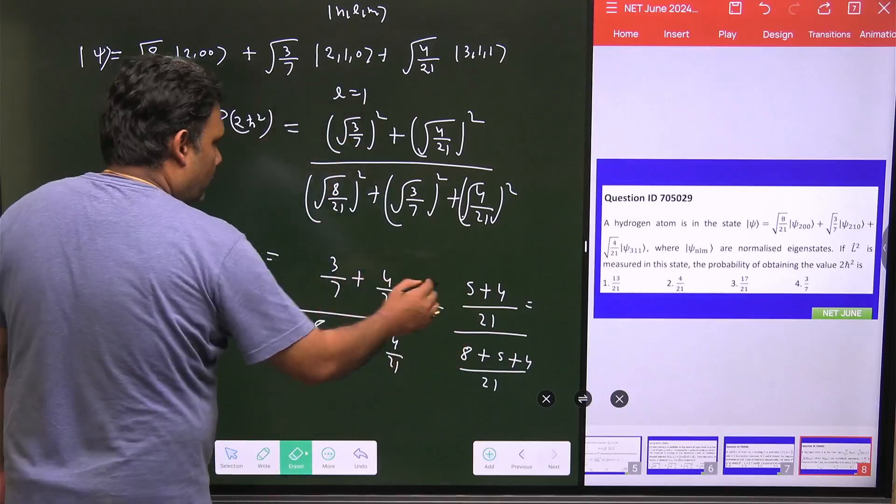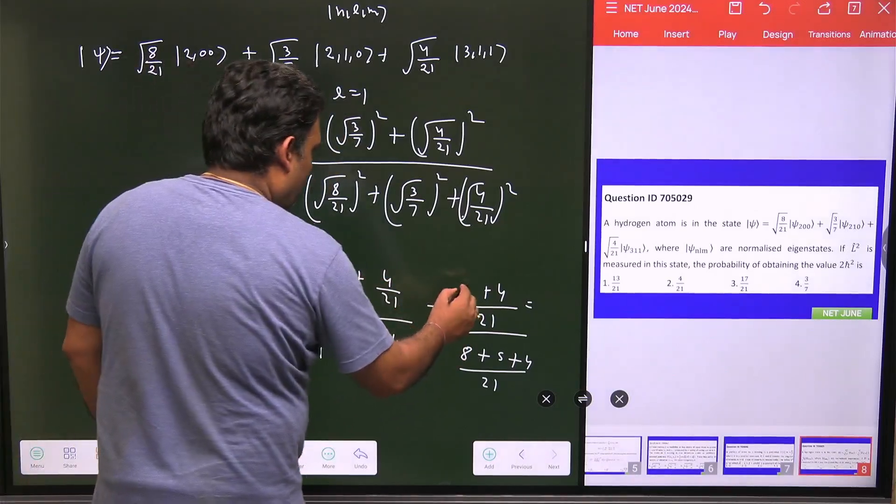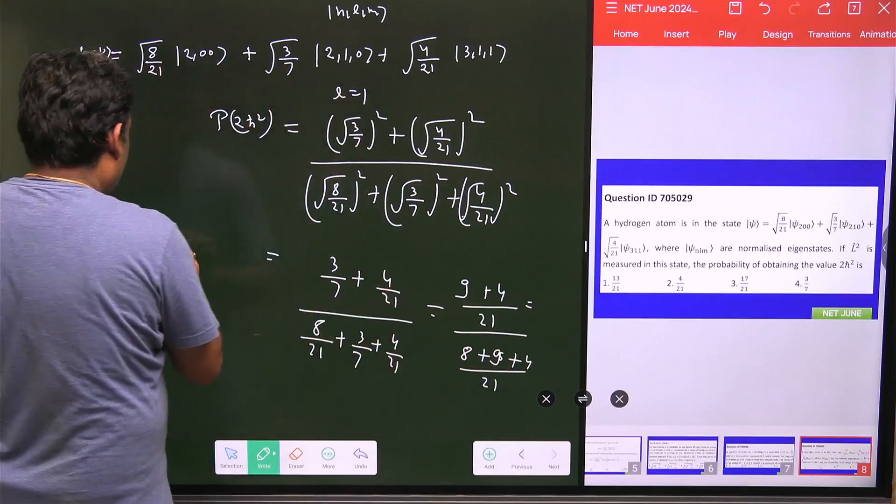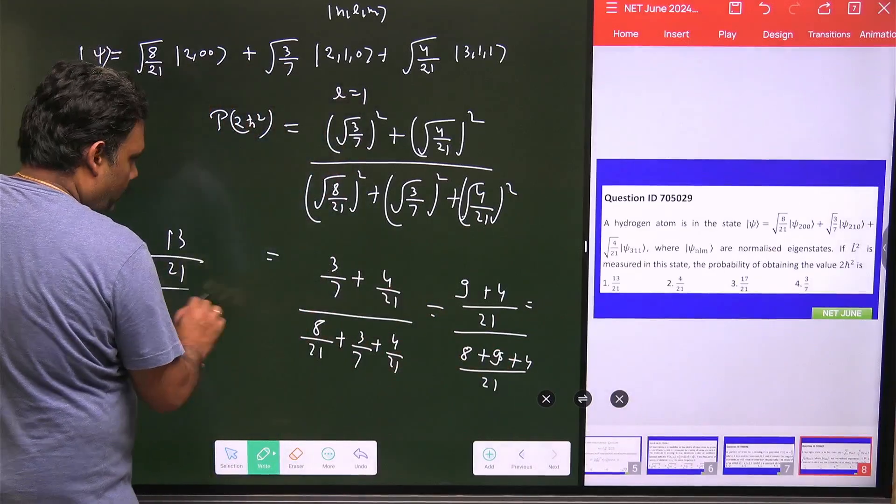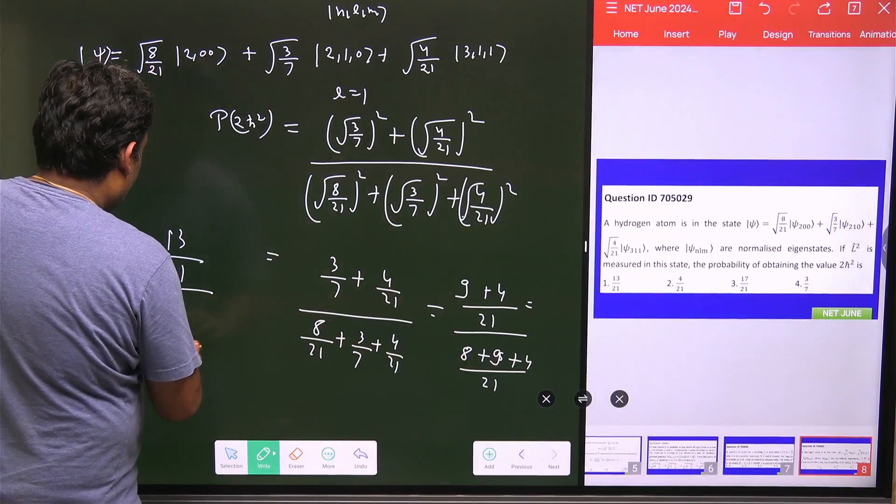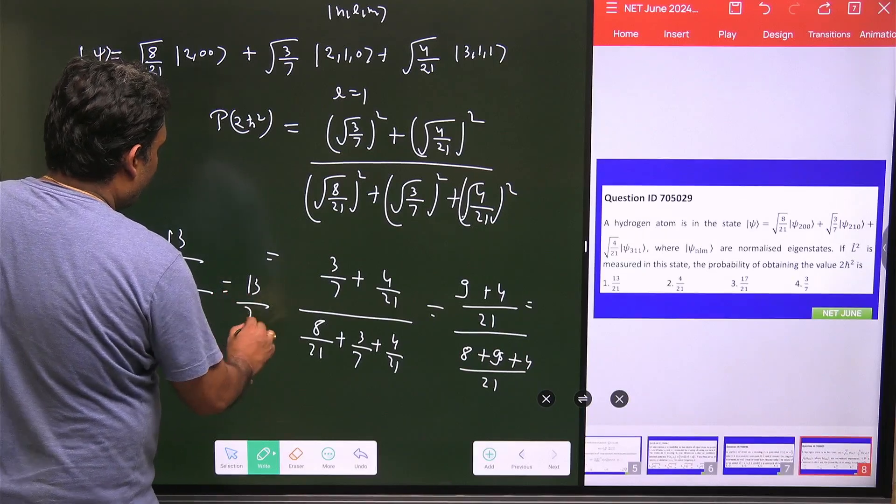So I am just going to calculate this particular value. So this value is 9, and this value is 9 also. So what will happen: 13/21, and here you have 21/21. So these two will cancel and you have 13/21.